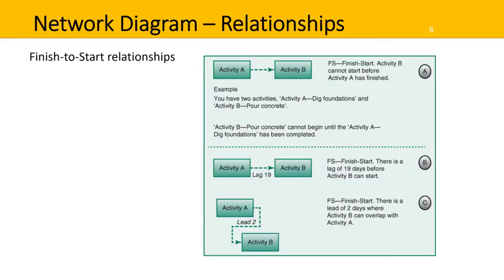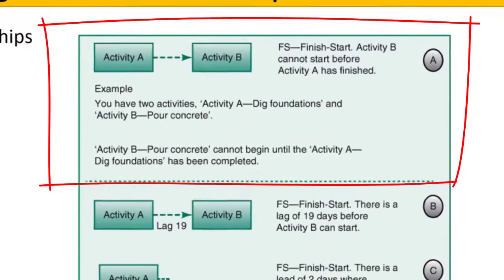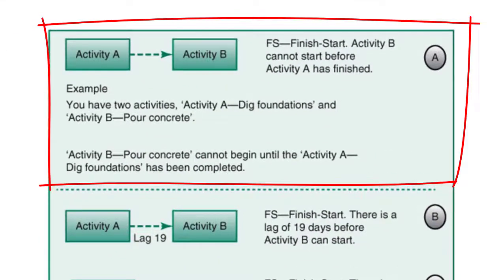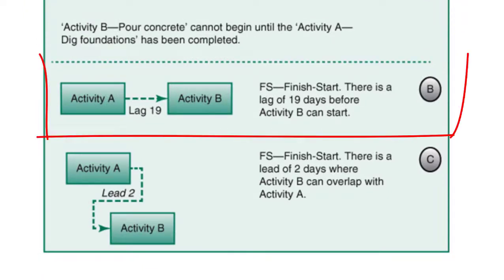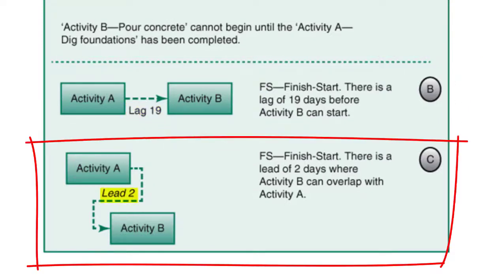These are examples of finish-to-start relationships. Up the top in A, activity B cannot start before activity A has finished. For example, activity A is dig foundations and activity B is pour concrete — activity B cannot begin until activity A is completed. For B, there is a lag of 19 days before activity B can begin. And for C, there is a lead of two days where activity B can overlap with activity A.